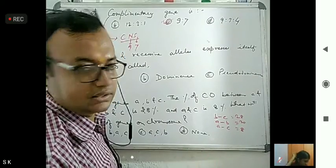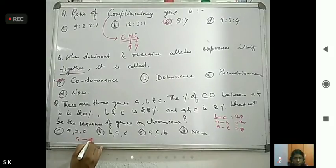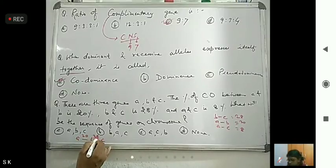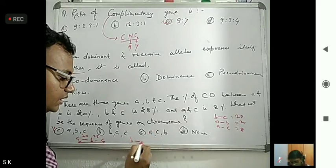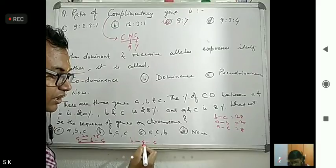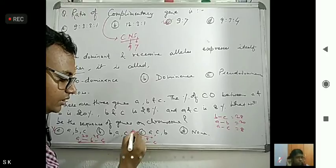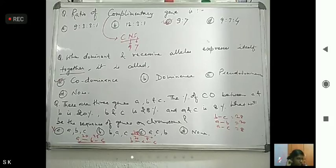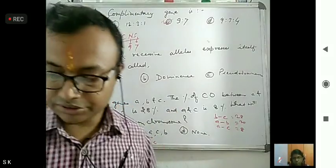To solve this, we look for the biggest distance first — B to C is 28. A to B is 20 and A to C is 8. If we try the sequence B, A, C: B to A is 20, A to C is 8, and combining them gives B to C as 28. That matches. So the correct gene sequence is B, A, C.